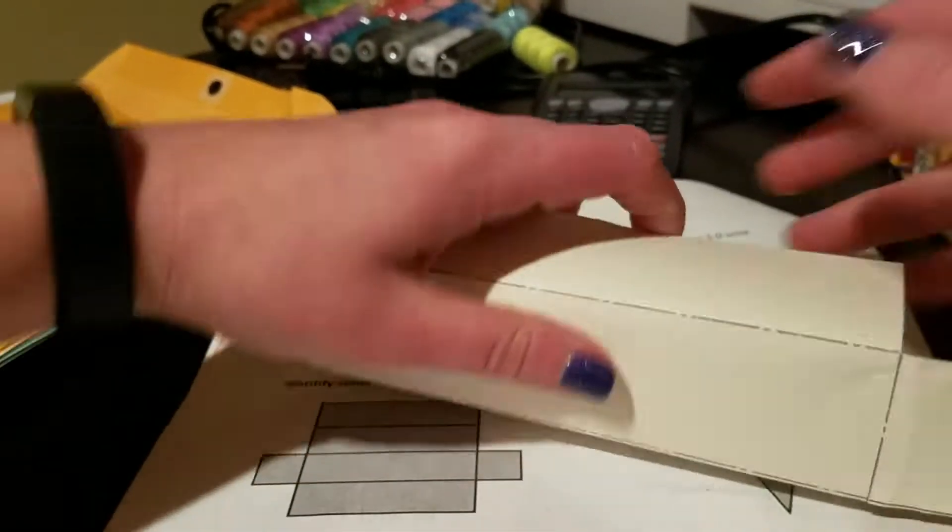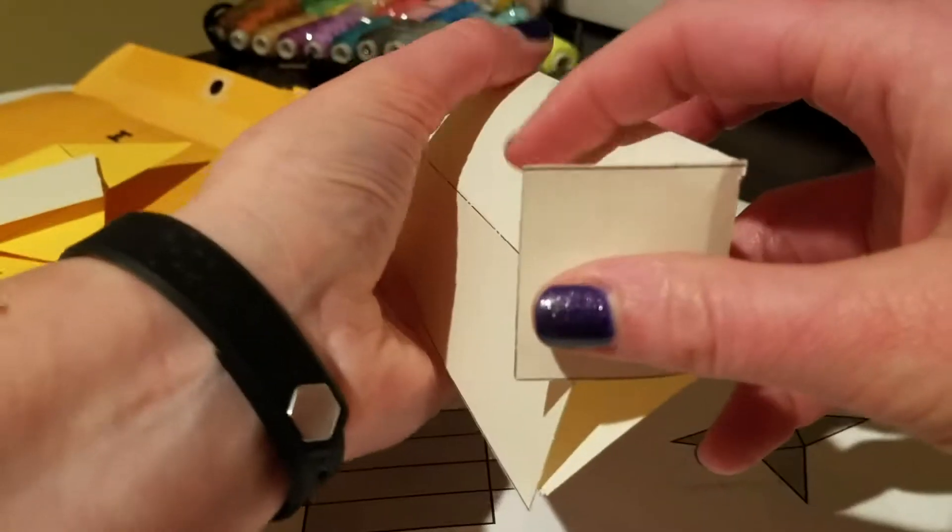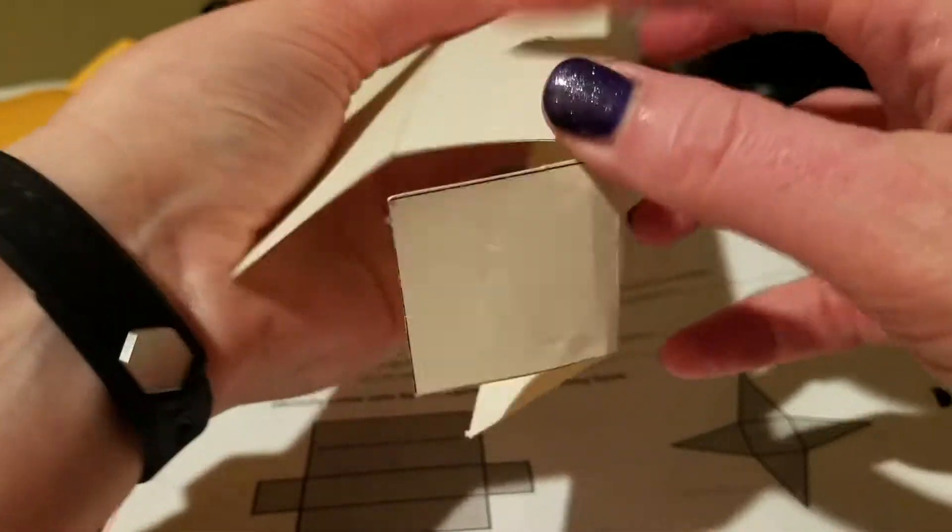This one we can fold up. We make a rectangular prism. Measure the tabs on the ends. So that's your rectangular prism then.